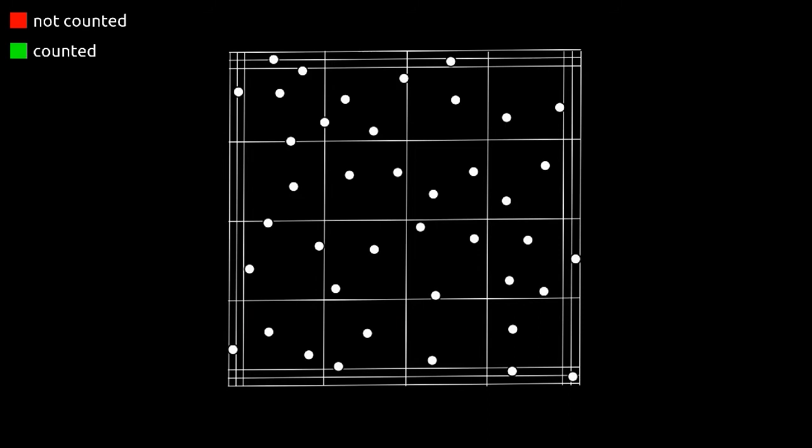To prevent you from counting cells twice counting rules have been defined. First, cells that lie between the third boundary lines of the group squares are not counted. Second, only cells that touch one of the two boundary lines for example the upper and the left line are counted. The cells that touch the two other boundary lines are not counted.